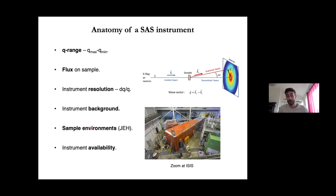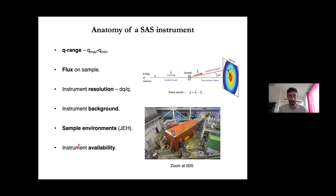Sample environments — which Judith will explain in the next lecture — range from simply keeping the sample in position, to controlling temperature, to very advanced environments where you can do complementary methods like spectroscopy. Another important practical aspect is instrument availability: for example, next year ILL and ISIS are going into a shutdown, so those instruments will not be available and we have to keep this in mind when choosing which instrument to use.